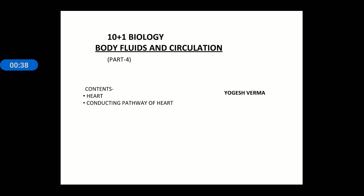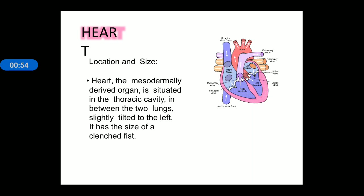Through RBCs, WBCs, and platelets, different functions are maintained by our body, and blood is transported by a pumping organ named the heart. So let's start the topic — heart. Heart is the main pumping organ, and it is mainly located in the thoracic cavity, which means the chest area.